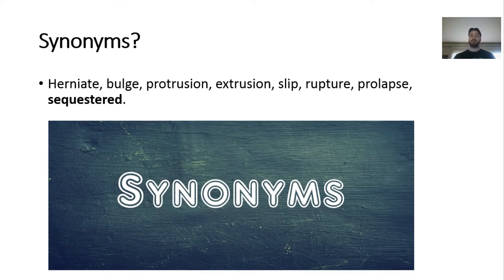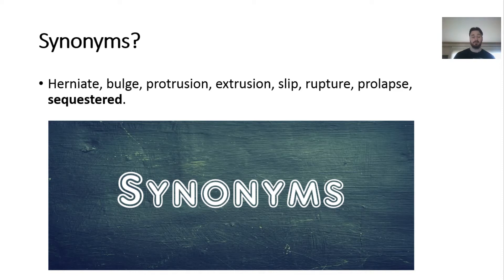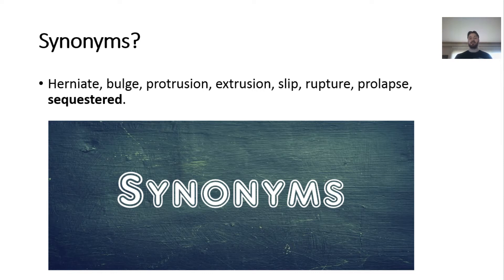I've bolded 'sequestered' because this is one of the only terms that can be identifiable on its own, and I'll get into what a sequestered disc is as I go through this presentation. But if you look up the synonym for a bulge, protrusion or protruding is a synonym for a bulge. A synonym for prolapse is a slip. And then rupture, extrusion, and herniate can all be referred to in similar context when referring to disc injuries.